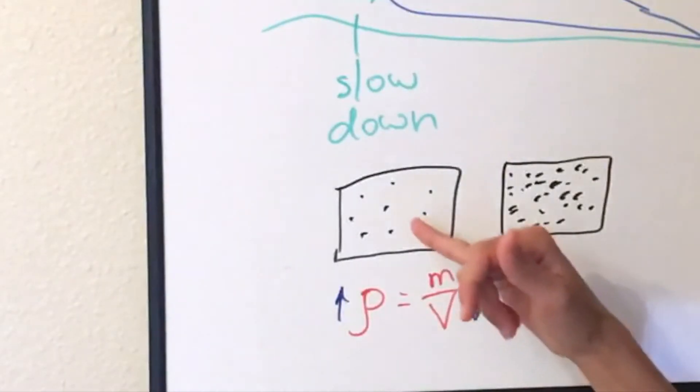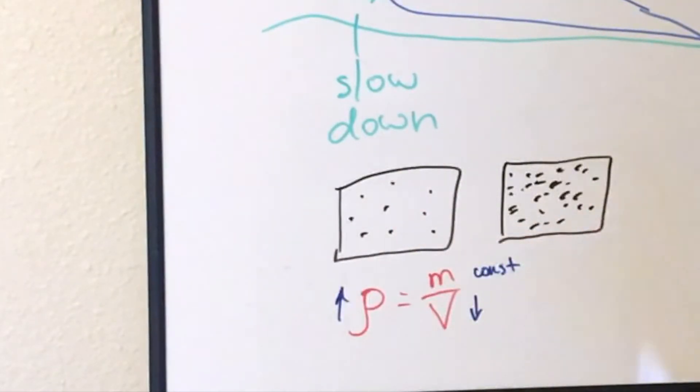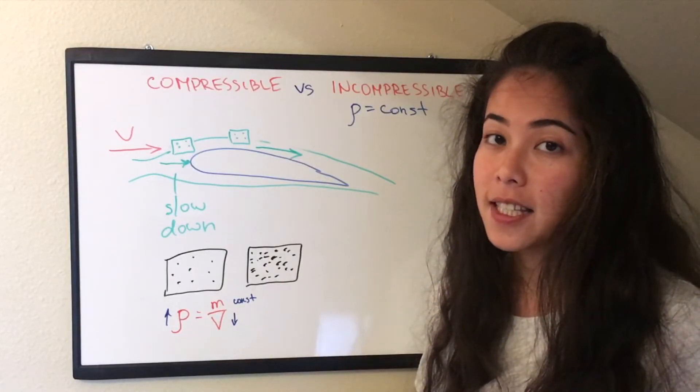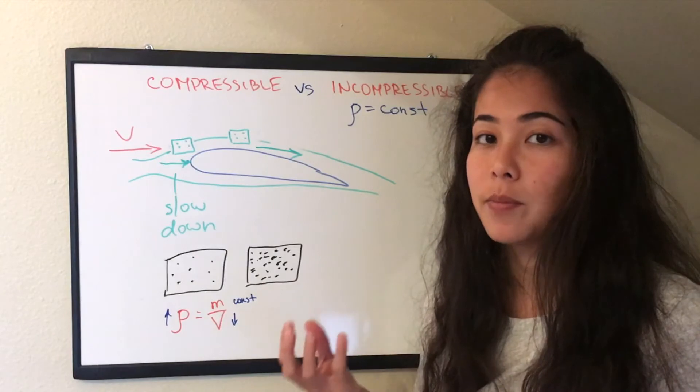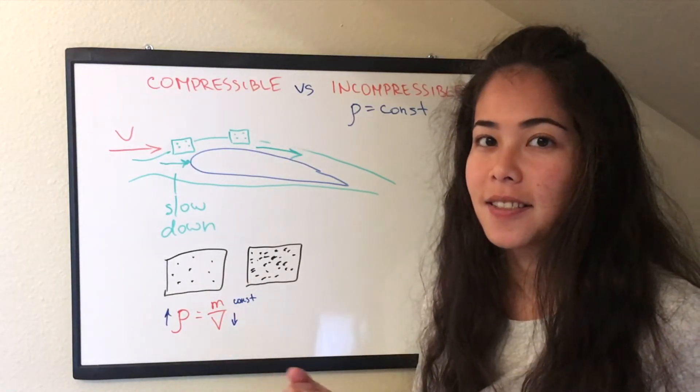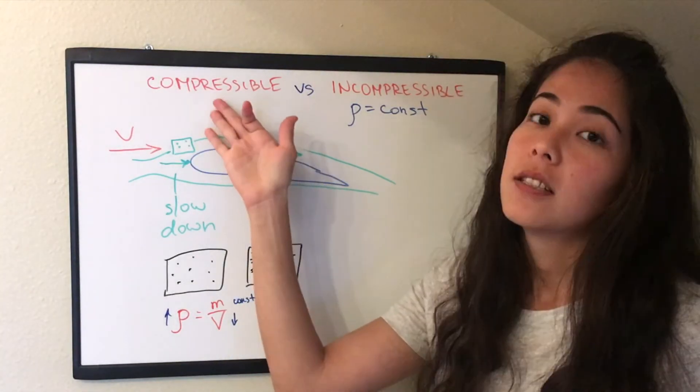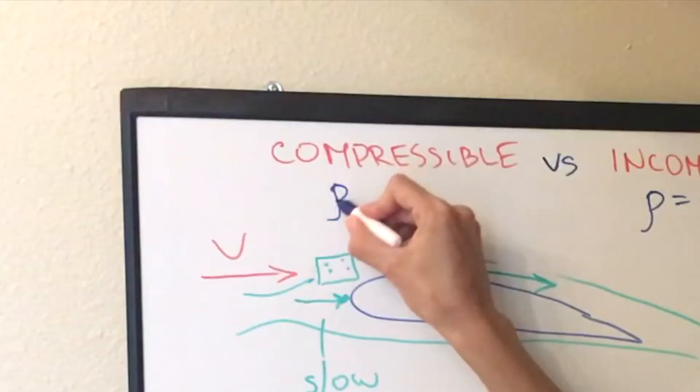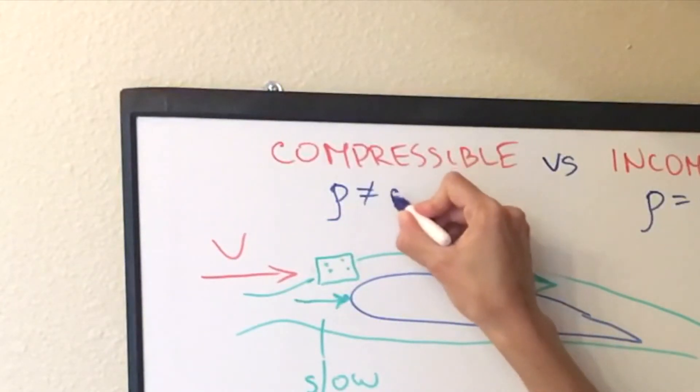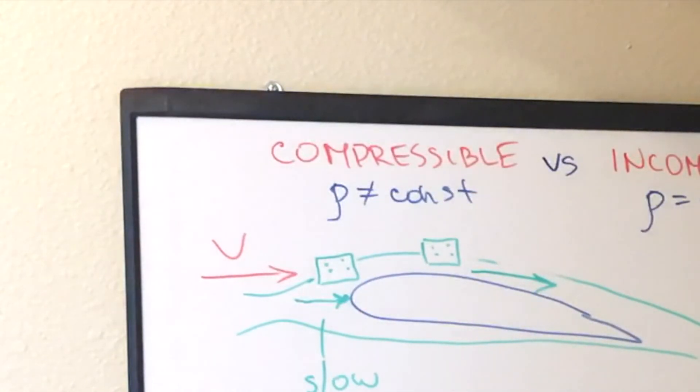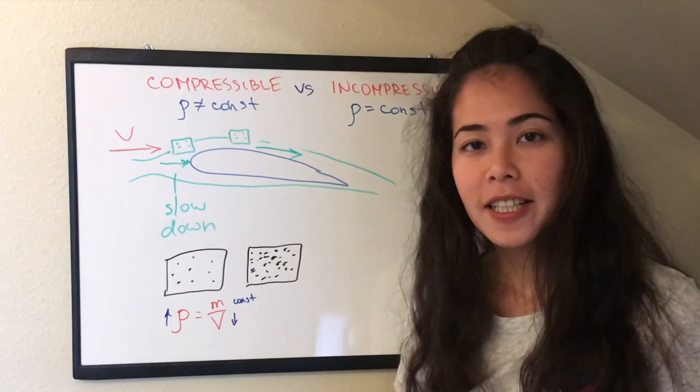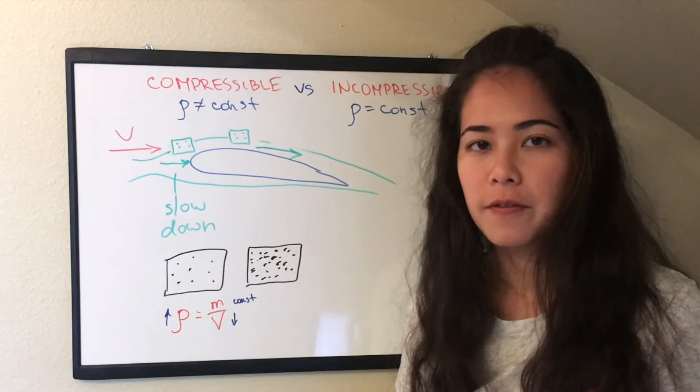So the air went from being like this to being like this. So actually the density increased, which made the air inside the balloon compressed. And that's how we have the word compressible, which means the density doesn't stay the same, or it doesn't stay constant. So we came to a conclusion here that air is a compressible fluid.